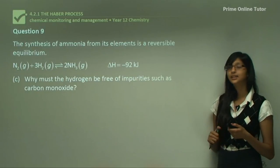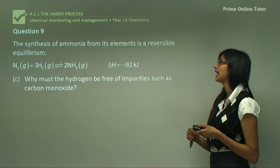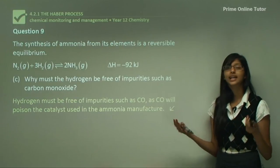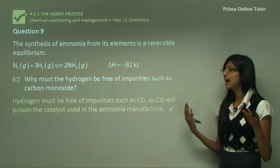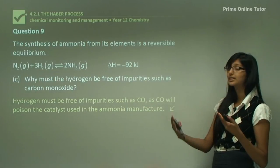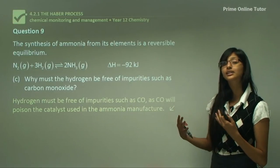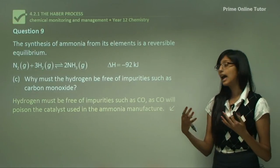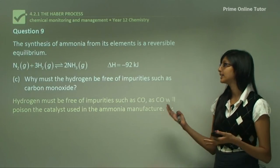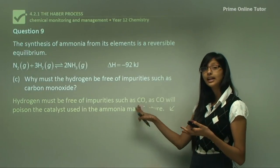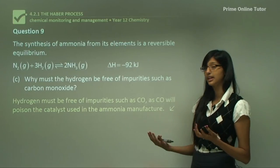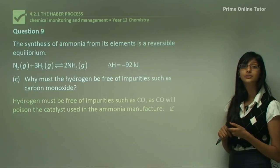Question 9c asks why hydrogen must be free of impurities such as carbon monoxide. In this reaction a catalyst is used, and if hydrogen contains impurities such as carbon monoxide it will poison the catalyst. Normally a catalyst is not consumed in the reaction and can be used over and over again. However, if the hydrogen has an impurity such as carbon monoxide it will poison the catalyst, preventing its reuse. So it is important that hydrogen is free from impurities.